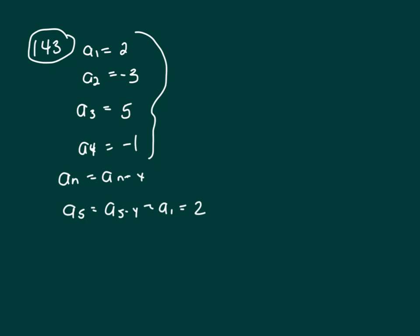Okay, they give us a sub 1 through a sub 4, and then they give us a formula, a sub n equals a sub n minus 4. So let's find the fifth term, a sub 5. n is 5, that would be a sub 5 minus 4, which is a sub 1. And what is a sub 1? a sub 1 is 2.